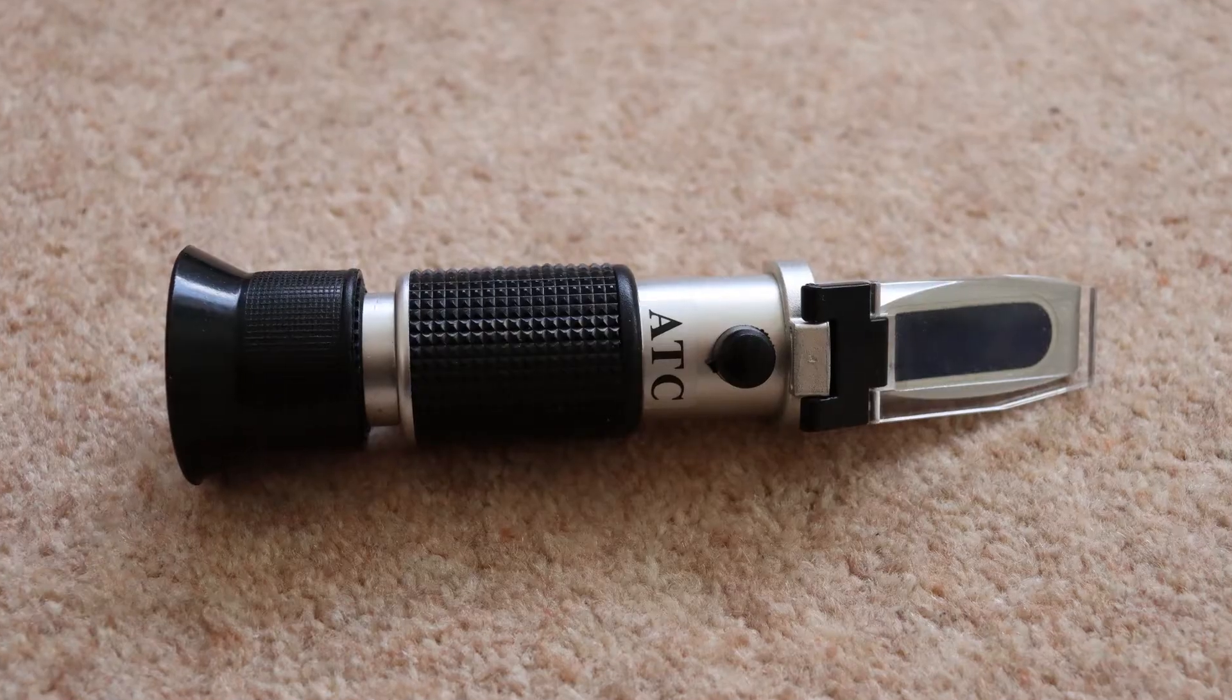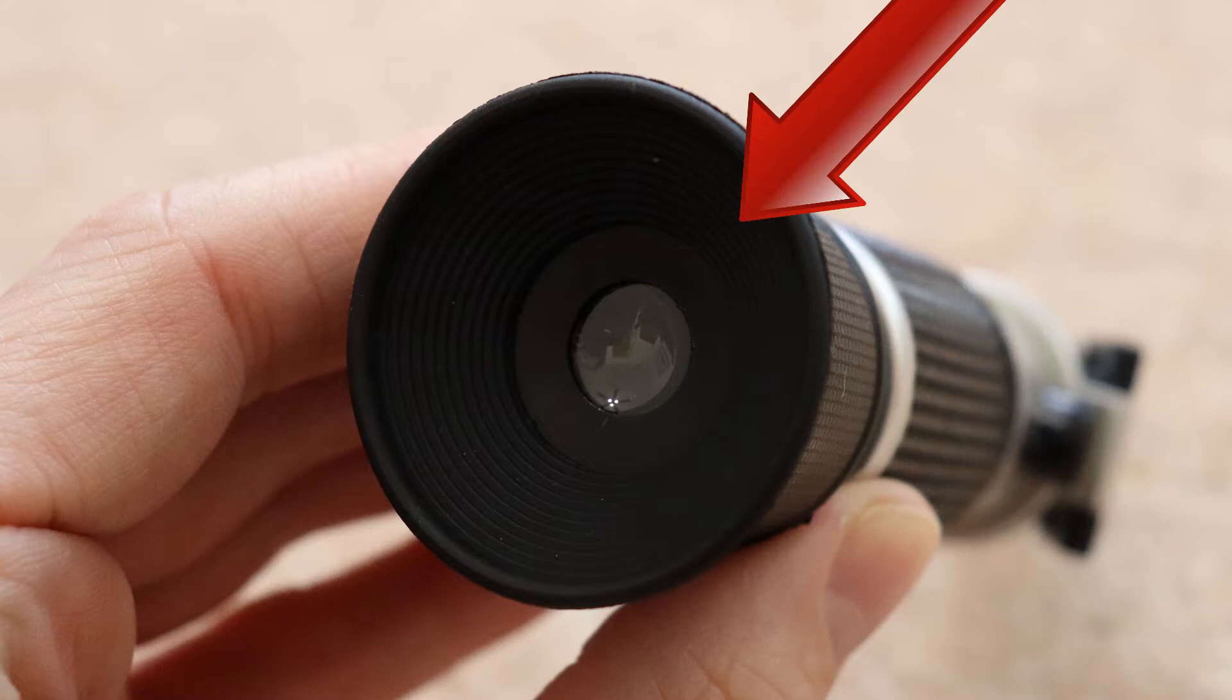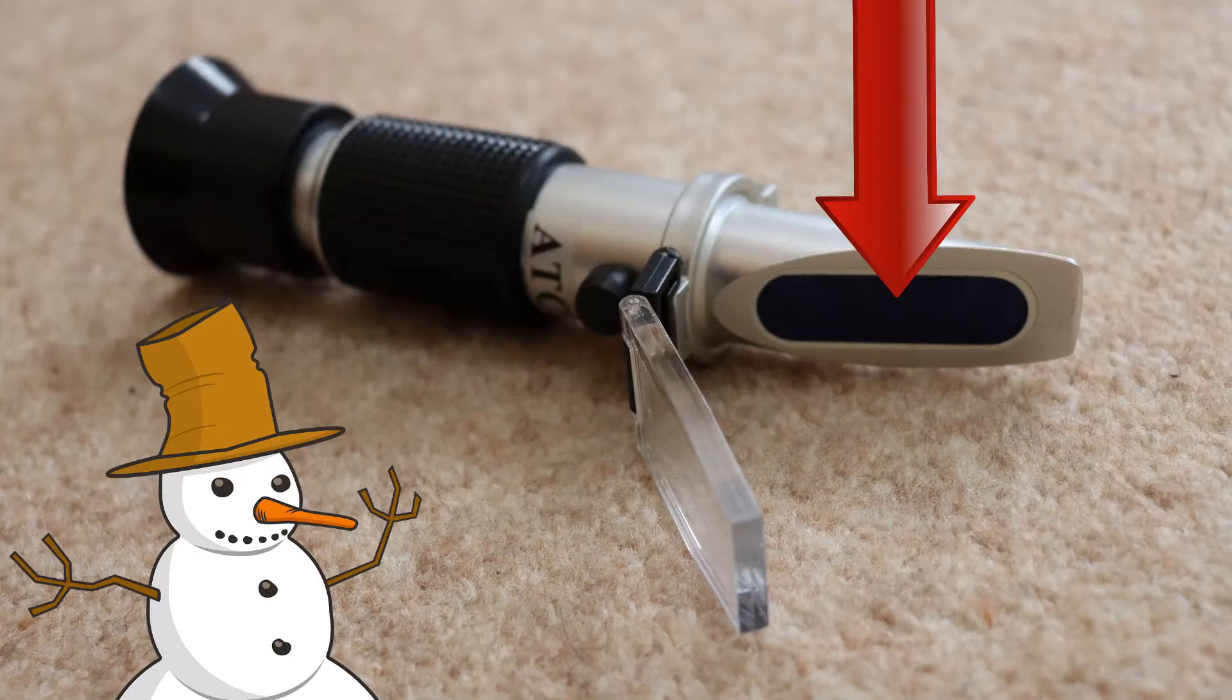Let's take a look at the equipment we need to test the freezing point of engine coolant, then we'll discuss how to configure it to get an accurate reading. Primarily, of course, we have the refractometer itself. It incorporates this eyepiece that you look through like a telescope, a plastic cover and a surface below the plastic cover for any liquid that's being tested.